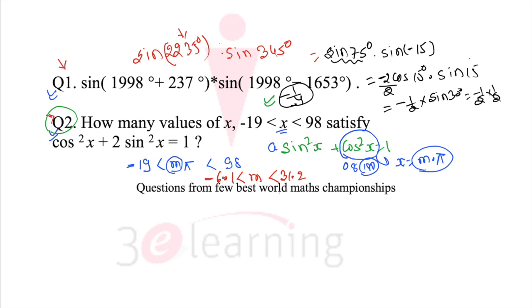So the range of m for the integral values is minus 6 to 31 including 0. So we have total 38 values possible. So the answer of first is minus 1 by 4, answer of second is nothing but 38.